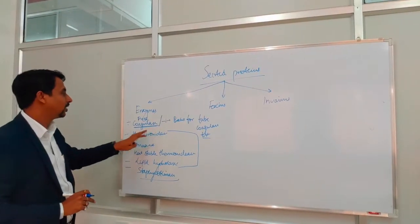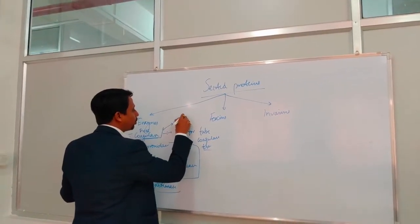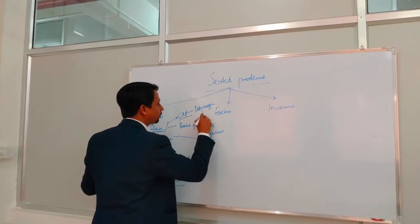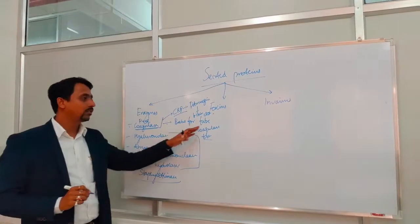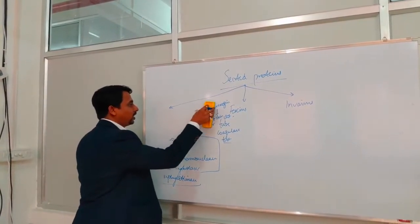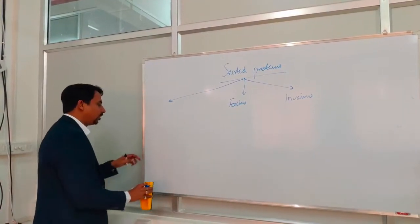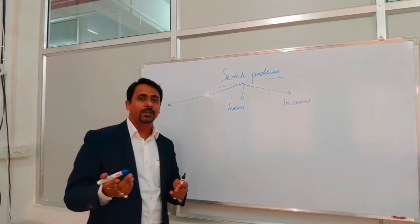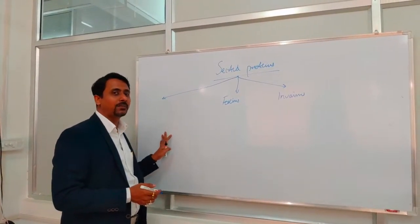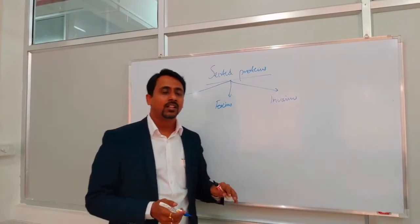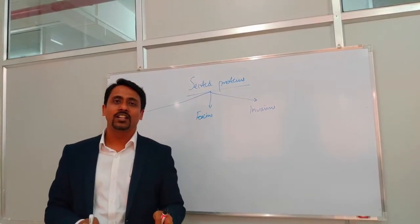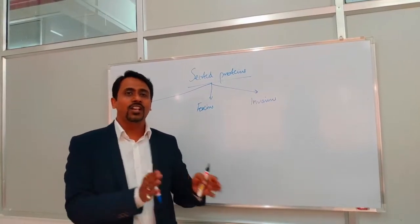Enzymes like DNase, staphylokinase, and lipases are present in both Staphylococcus and Streptococcus. Despite this, Staphylococcus causes primarily localized infection whereas Streptococcus causes primarily disseminated infection. The reason is that the amount of toxins and enzymes produced by Staphylococcus is much less than Streptococcus, so lesions are more disseminated in Streptococcus and more localized in Staphylococcus.